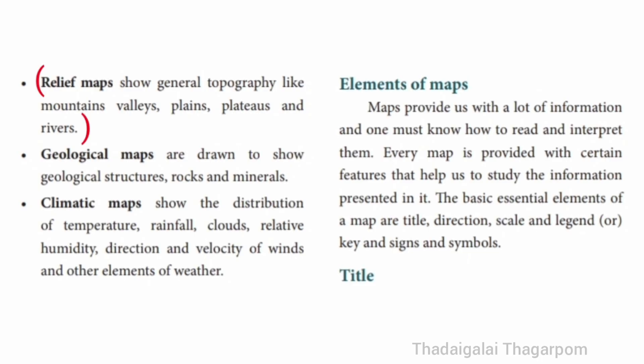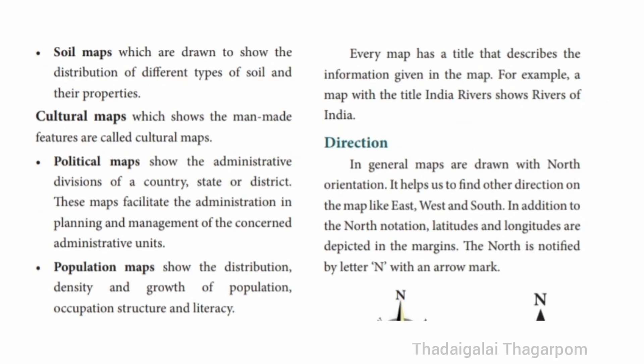Geological maps are drawn to show geological structures, rocks and minerals. Climatic maps show the distribution of temperature, rainfall, clouds, relative humidity, direction and velocity of winds and other elements of weather. Soil maps show the distribution of different types of soil and their properties. Cultural maps show the man-made features.